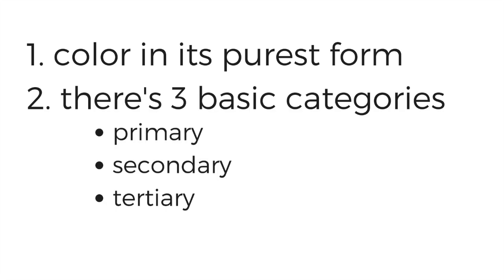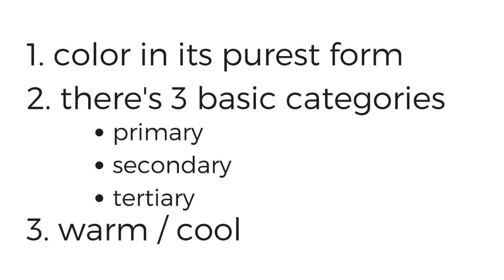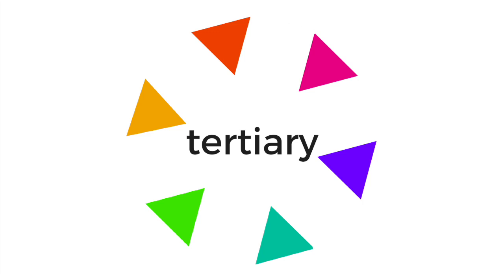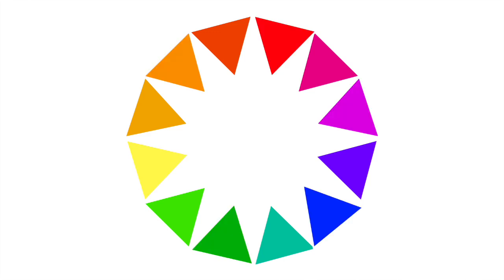One, it's a color in its purest form. Two, there are three basic categories of hues: primary, secondary, and tertiary. And three, they come in warm or cool. Hues are your basic colors in their purest form, and you can break them down into primary, secondary, and tertiary colors.